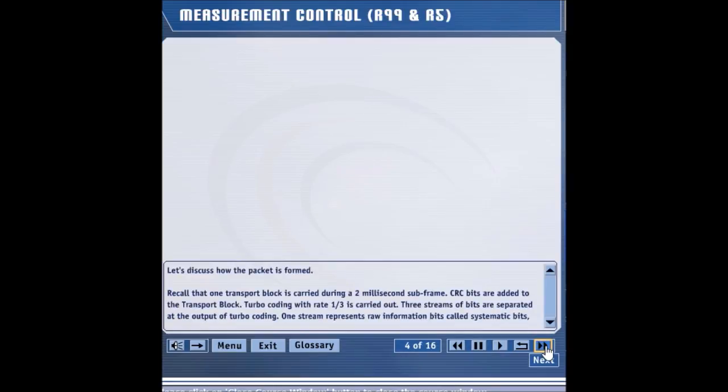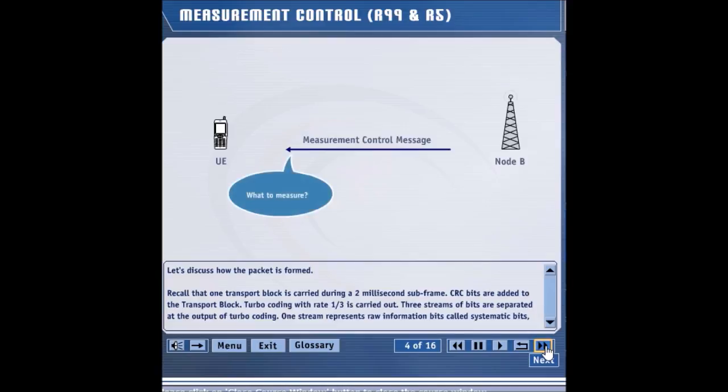Let's look at the measurement aspect of the HSDPA handover. Node B sends the measurement control message to the UE on behalf of the RNC. In the message, the UE is instructed as to the quantities to be measured, such as pilot strength. The UE also gets information about which pilots should be monitored. The UE is also directed to report the measurements periodically or based on events.